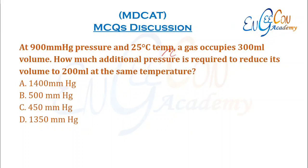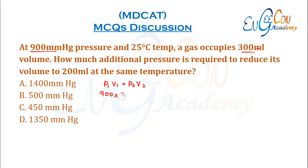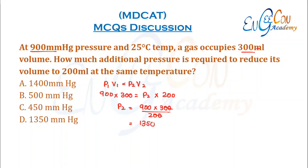At 900 mm high pressure and 25°C, a gas occupies 300 ml volume. How much additional pressure is required to reduce its volume to 200 ml at the same temperature? Since temperature is the same, we use Boyle's Law: P1V1 = P2V2. P1 = 900, V1 = 300, V2 = 200. So P2 = (900 × 300) / 200 = 2700 / 2 = 1350. The new pressure is 1350 and the old is 900, so 450 atm additional pressure is required.